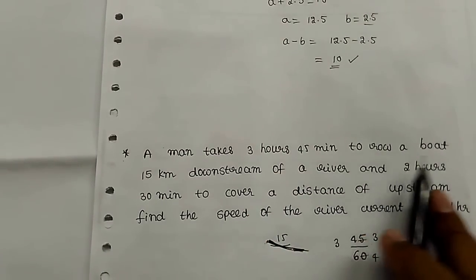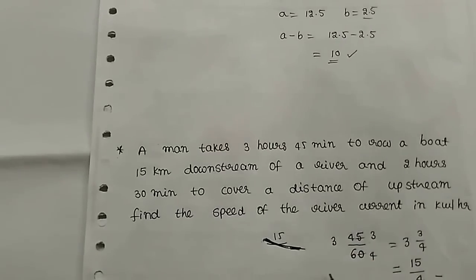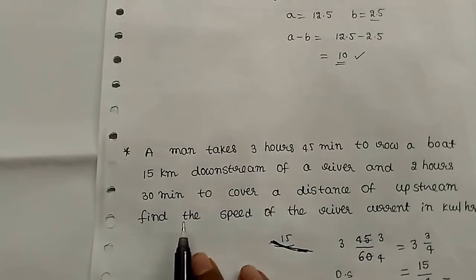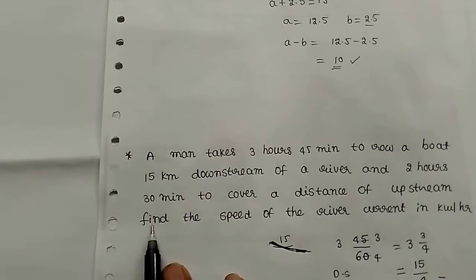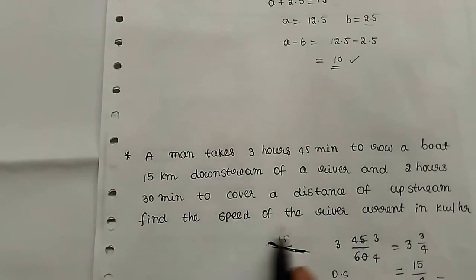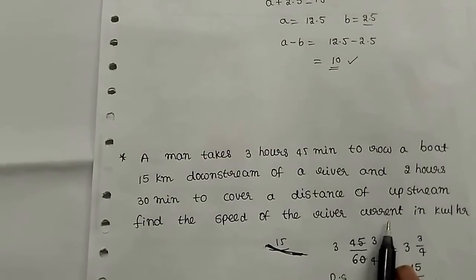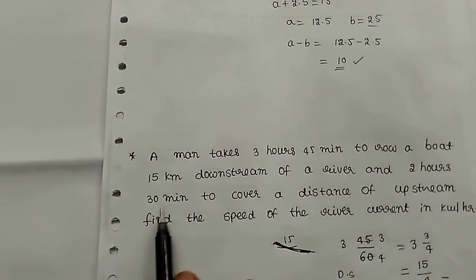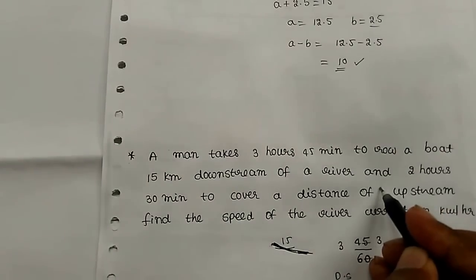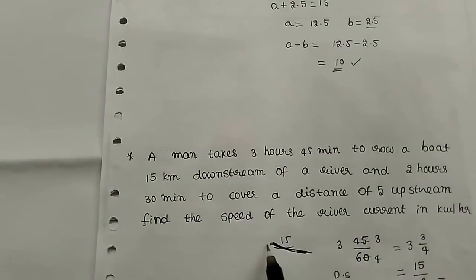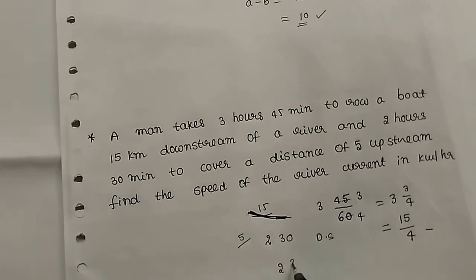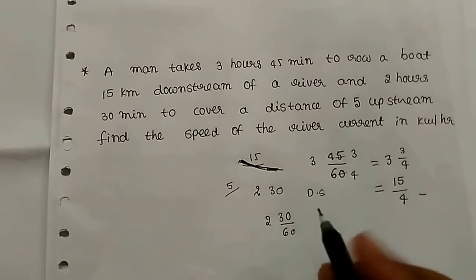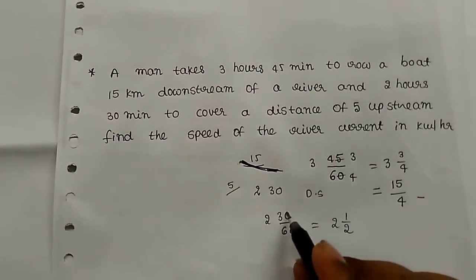Man takes 3 hours 45 minutes to row a boat 15 km downstream. Next, 2 hours 30 minutes to cover a distance upstream. The upstream distance is 5 km. Convert 30 minutes: 30 by 60; zeros cancel, giving 1 by 2. So total time is 2 and 1 by 2, which is 5 by 2 hours.